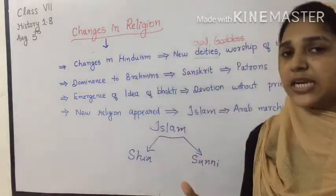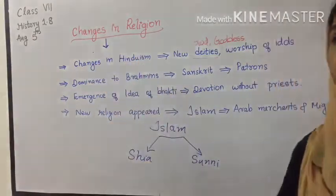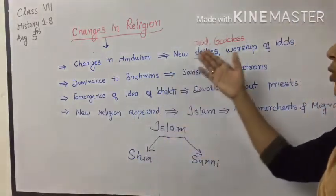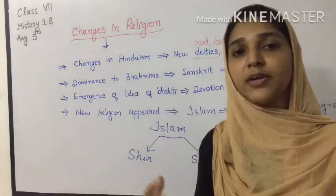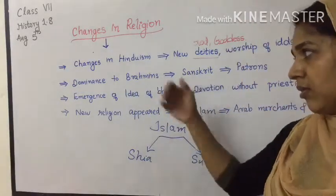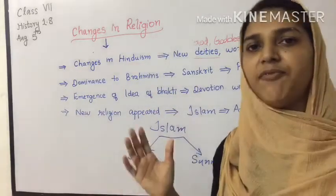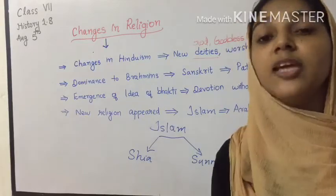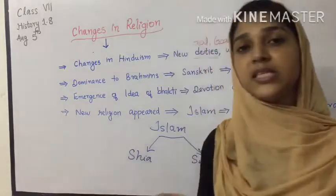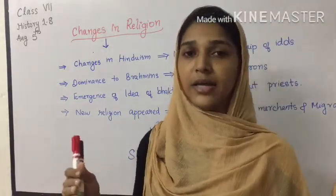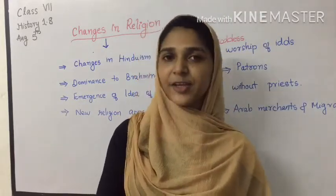That was the other change that happened in the medieval period. To summarize: Hinduism became stronger and many new gods and goddesses were worshipped; dominance was given to Brahmins who were considered superior in society; the idea of Bhakti emerged where every person started praying to God from their own houses; and a new religion, Islam, was introduced in the 7th century. That's all for today — catch you in the next class. Thank you.